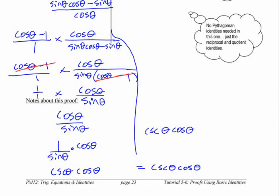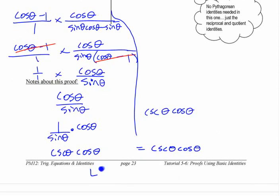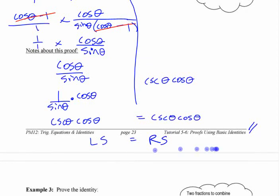You can, if you really want to just emphasize this, you can say left side equals right side if you want. Some people, for some reason, I have no idea what this means, but they put two little diagonal lines like that. I think there's some meaning behind that to say you're done.